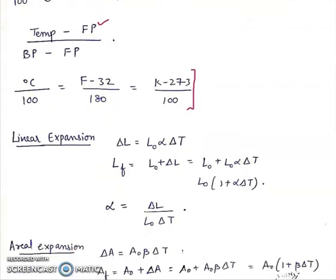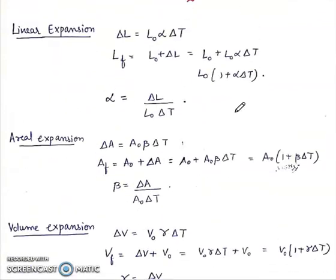Linear expansion: Delta L is given by L0 alpha delta T. Alpha is the coefficient of linear expansion. It is given by change in length upon initial length upon change in temperature. Change in length per unit initial length per unit change in temperature is alpha.